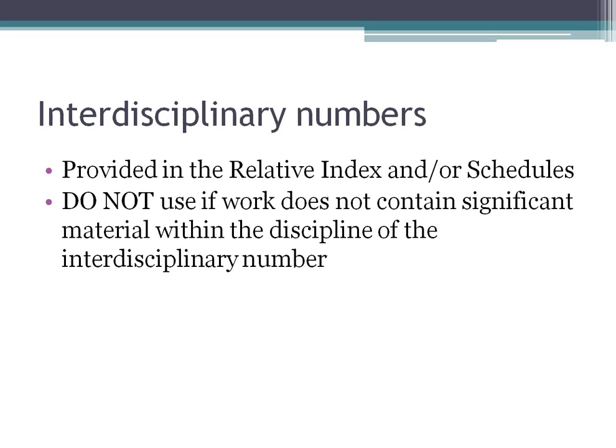To summarize interdisciplinary works: the number is provided sometimes in the relative index and sometimes in the schedules. An important thing to remember is you shouldn't use an interdisciplinary number if the work does not contain significant material within that interdisciplinary discipline. For example, if the book had been mostly about hand-making costume jewelry, we wouldn't put it with the mass production interdisciplinary number. This brings us back to the rule of fuller treatment.